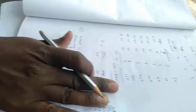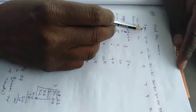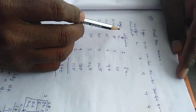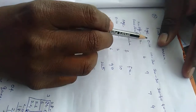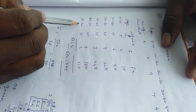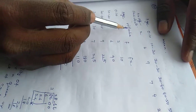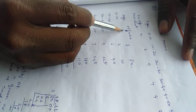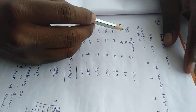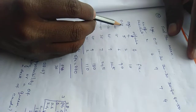Next one: Find the mean. Age and number of respondents are given. X values are the mid-values of each age group. Age 0 to 10 has mid-value 5.